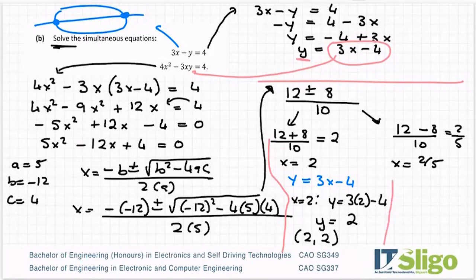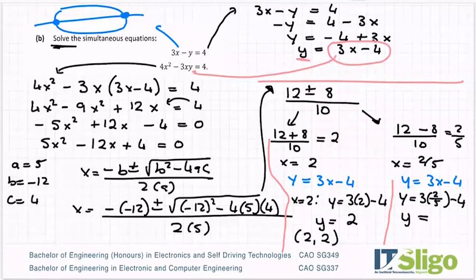And in this one, when x is 2 fifths, y is again equal to 3x minus 4. So I'll sub in the 2 fifths for the x and find the matching y. So y is equal to 3 times 2 fifths minus 4. Can't do that one in my head. 3 bracket 2 fifths minus 4. And I get minus 14 over 5. So again, x comma y.